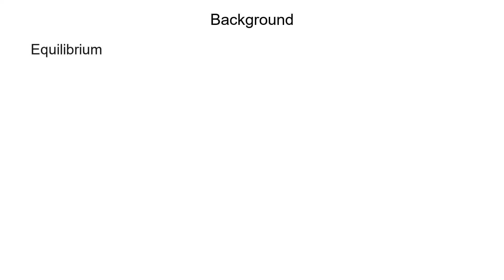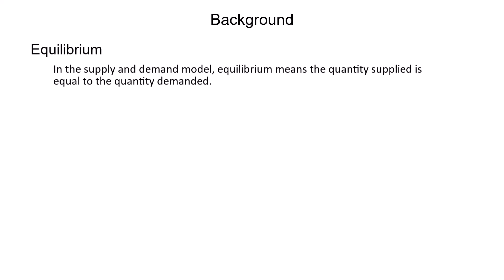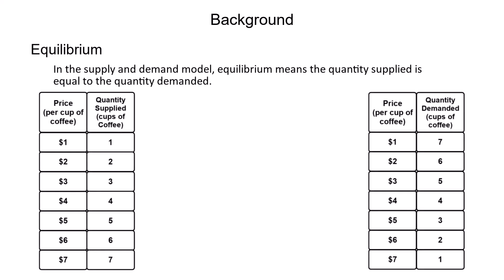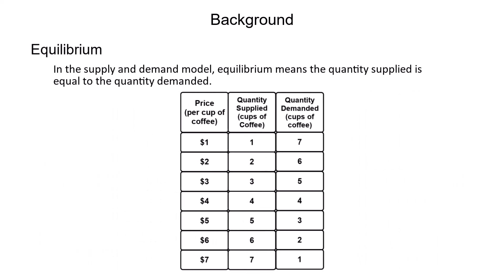The term equilibrium means that a system is in balance — there is no tendency for the system to change. In terms of the supply and demand model, this means what consumers are willing to pay for a given amount of a good is the same as what firms are willing to supply and accept payment for. Let's look in some detail at an example of why the equilibrium point is where the quantity demanded and the quantity supplied are equal.